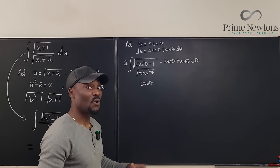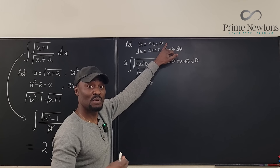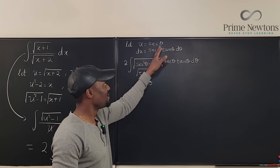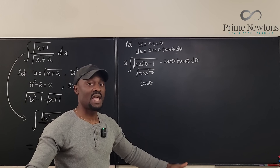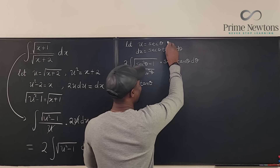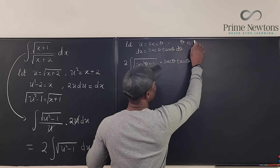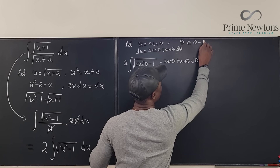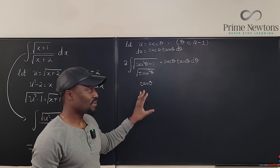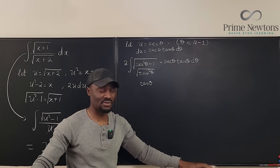The square root of tan squared theta is plus or minus tan theta, but I'll specify that theta is in the first quadrant, where everything is positive. This avoids the question of plus or minus entirely, so we simply have tan theta.